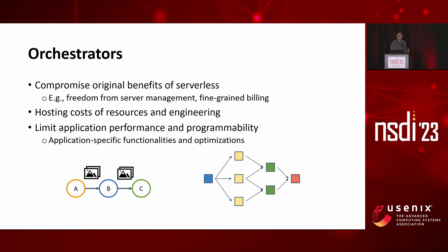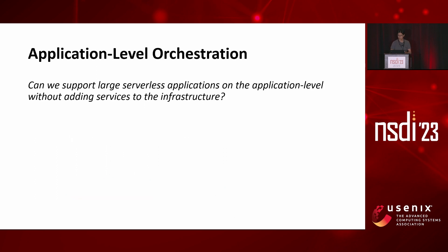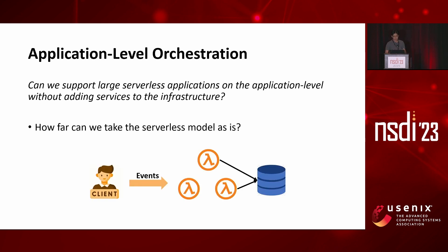This creates a compromise familiar to many systems — such as waiting for the OS kernel to add certain functionalities when, in reality, it is much harder and slower for a kernel to evolve than the applications themselves. In this work, we try to look at the problem from a different angle. Instead of adding new services into the infrastructure, we ask if this problem can be solved at the application level without any changes to the existing infrastructure. Examining this question is interesting both from a research perspective — it examines how far we can take the serverless abstraction as-is before adding or modifying something becomes necessary.